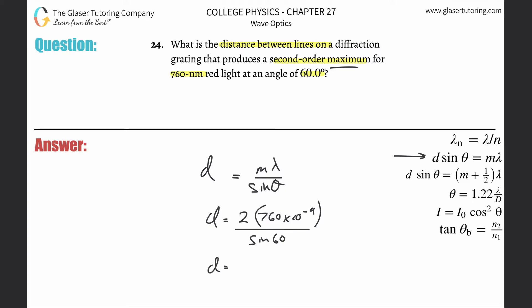So let's plug it all into the calculator. So there's going to be 2 times then 760 times 10 to the minus 9th, divided by then sine of 60. Make sure your calculator is in degree mode. And then this is going to be 1.76 times 10 to the minus 6th.